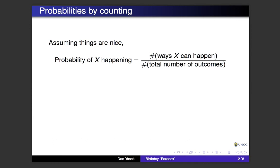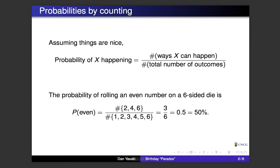To compute the probability of something happening, you take the total number of ways X can happen divided by the total number of possible outcomes. For example, suppose I have a fair six-sided die and I want the probability of rolling an even number. There are six total outcomes, and three even numbers — two, four, or six — so the probability is three over six, which is 0.5, or 50%.